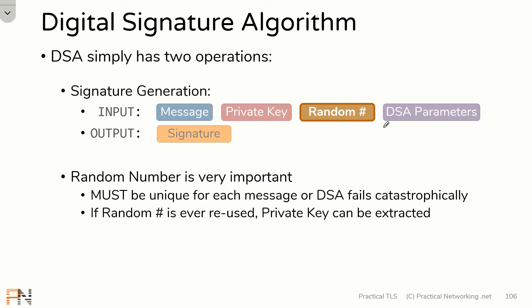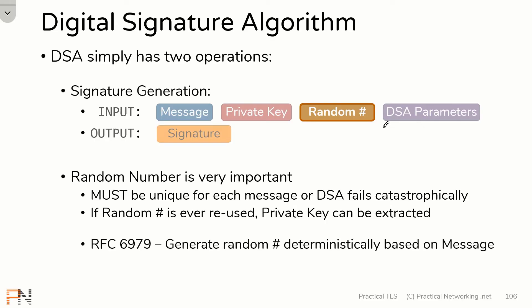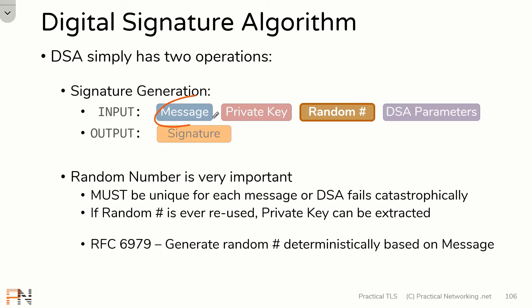One option is to use a random number so large that you never run the risk of using the same random number twice. Another option is to use RFC 6979, which allows you to deterministically generate a random number based upon the message you're trying to sign. That means the only way you'd ever have duplicate random numbers is if you're signing the same message — in which case you don't have this failure point.